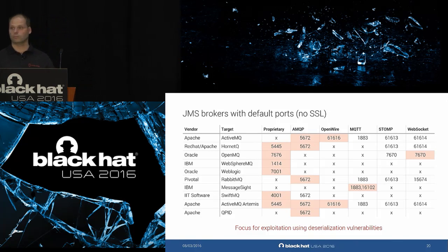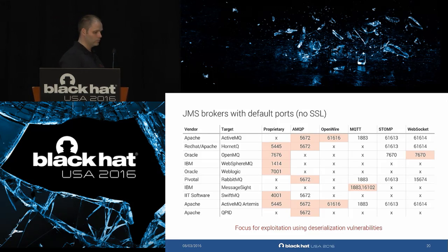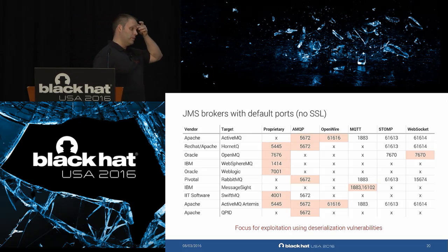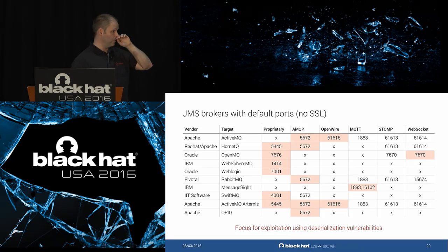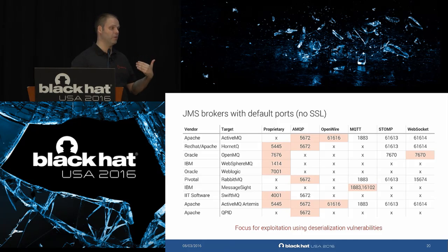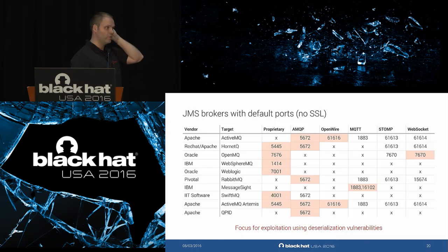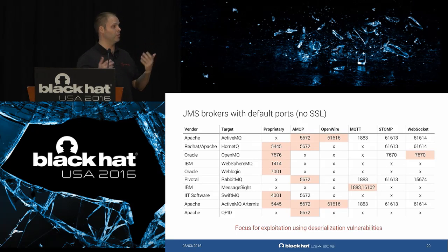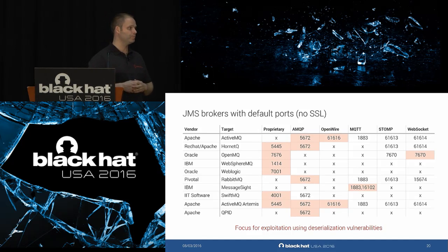Q: For the ones not yet fixed, what's the timeframe, or did they give reasons for not fixing? A: From Amazon SQS I heard they'll address it in future releases but no timeframe. A Red Hat developer told me they won't fix HornetQ because it's post-authentication, which in my opinion is not a good reason. From IBM I heard they'll fix it in Q3. From others I haven't heard anything — to be honest, I haven't put pressure on them because I've found about 20 deserialization vulnerabilities in the last year and I'm not following all of them.